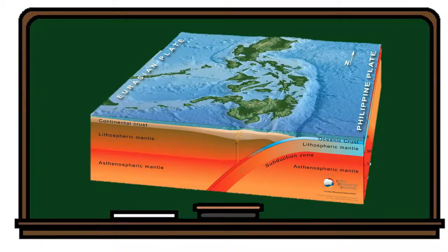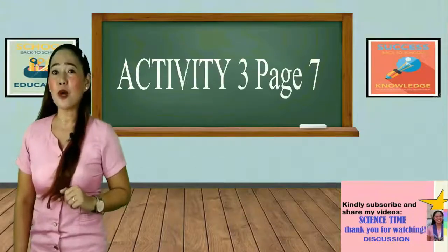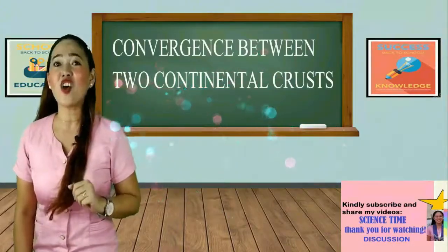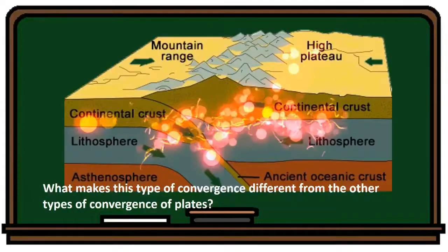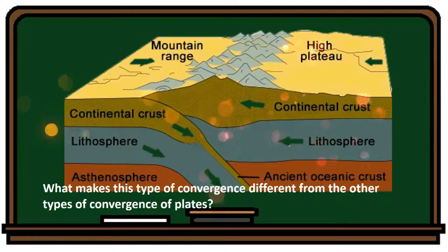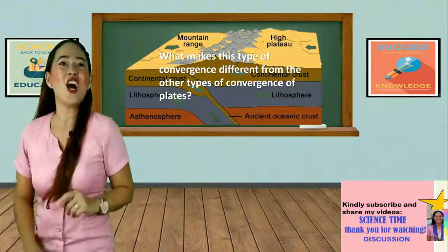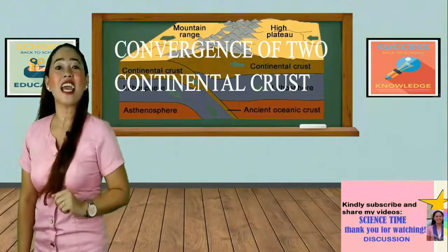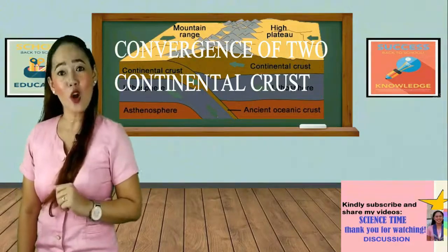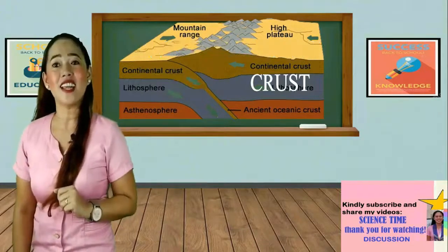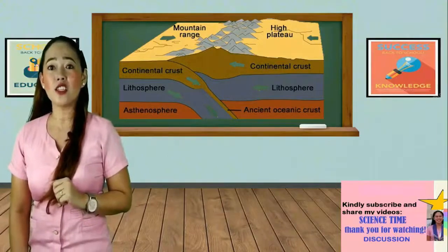You are now on the next level of learning. Let us perform Activity 3, page 7, 'Convergence Between Two Continental Crusts.' What have you observed? What makes this type of convergence different from the others? You are now very good at identifying and describing geologic processes that take place in convergence between two continental crusts. Now let us discuss further.